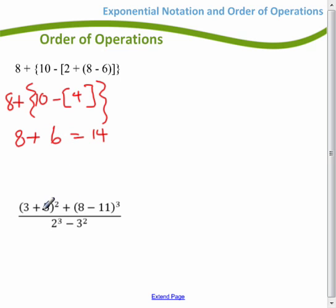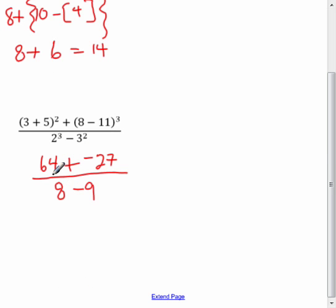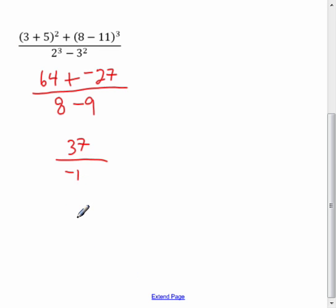Last one, 3 plus 5, that would be 8. 8 squared is 64 plus. 8 minus 11 is negative 3. Negative 3 cubed is a negative 27. Again, I did a couple of steps in order at a time. 2 cubed is 8. 3 squared is 9. Okay, so on the top I have 64 plus a negative 27. That would be about 37. So 37 on top. And 8 take away 9 is a negative 1 on bottom. So 37 divided by a negative 1, negative 37 would be my answer to that one.